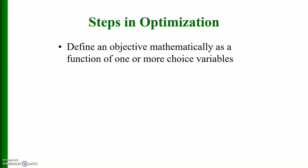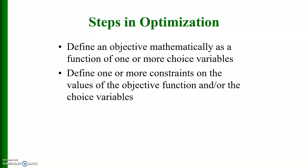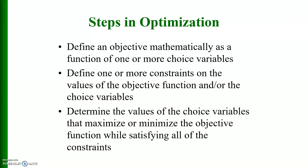There are some steps involved in optimization. First, we define an objective mathematically as a function of one or more choice variables. Then we define one or more constraints on the values of the objective function and/or the choice variables. Finally, we determine the values of the choice variables that maximize or minimize the objective function while satisfying all of the constraints.